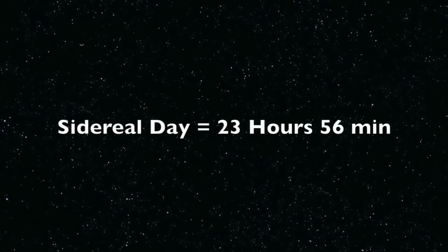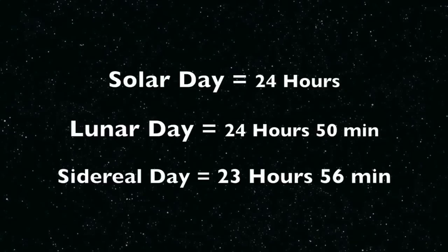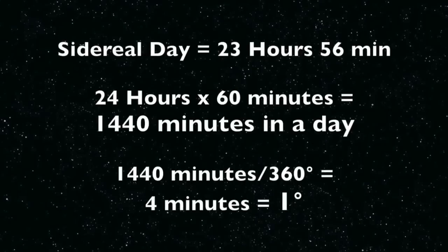Now the stars are slightly different. There's something known as a sidereal day, which is slightly shorter than a solar day. A solar day is a true 24 hours. A sidereal day, or stellar day, is slightly shorter by four minutes — only 23 hours and 56 minutes. Because it's four minutes faster than a regular day, this four minutes equates to one degree. So the stars all rotate around Polaris every single day, and because they're slightly faster than the sun, it gains one degree per day.